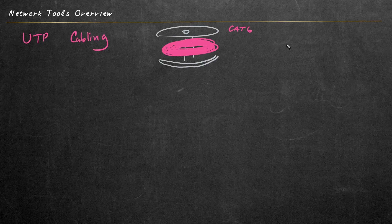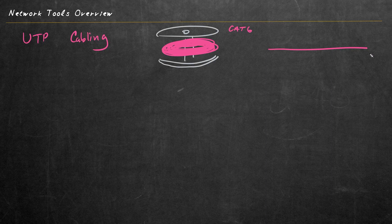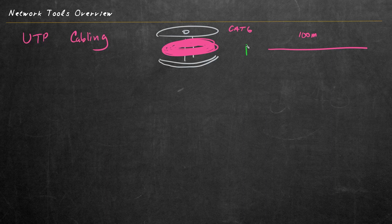Let's imagine we have a length of cable here. In Ethernet, end to end, we can't go further than 100 meters based on the specification. And that would be 100 meters from the device at one end to the device at the other end.